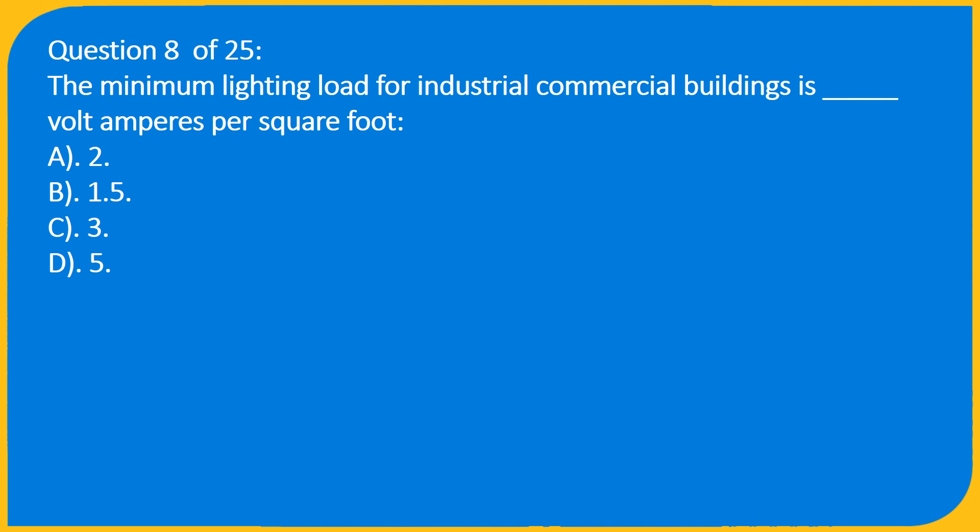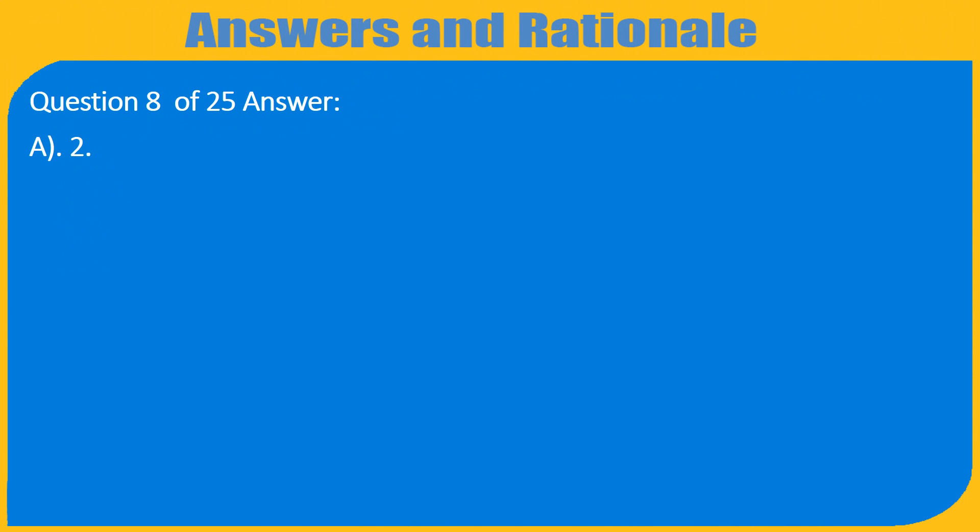Question 8 of 25: The minimum lighting load for industrial and commercial buildings is how many volt-amperes per square foot? A. 2, B. 1.5, C. 3, D. 5. Answer: A. 2.